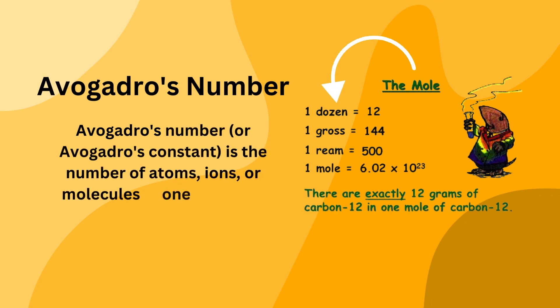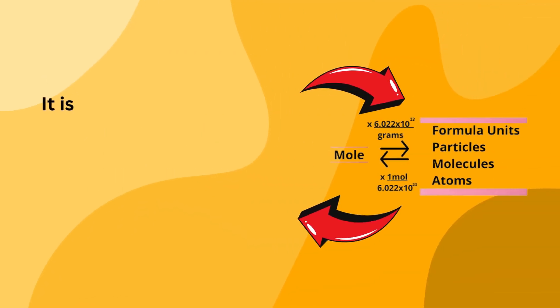Avogadro's number, or Avogadro's constant, is the number of atoms, ions, or molecules in one mole of a substance. One dozen equals 12, one gross equals 144, one ream equals 500, one mole equals 6.022 into 10 to the power of 23. It is defined as 6.021 into 10 to the power of 23 entities per mole.